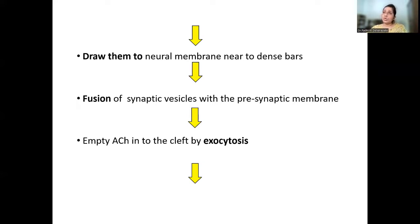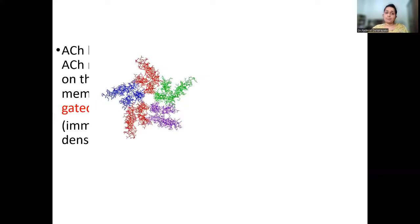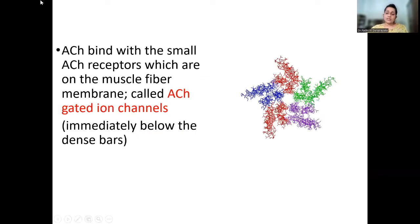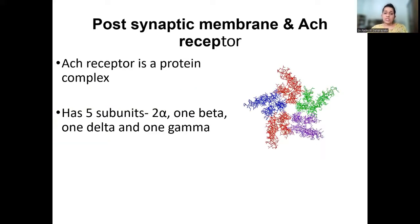To summarize: calcium ions draw vesicles to the neural membrane; fusion of the synaptic vesicles with the pre-synaptic membrane releases acetylcholine into the cleft by exocytosis. Acetylcholine then binds with acetylcholine receptors on the muscle fiber membrane — acetylcholine-gated ion channels located immediately below the dense bars. The acetylcholine receptor is a protein complex with five subunits: two alpha, one beta, one delta, and one gamma.